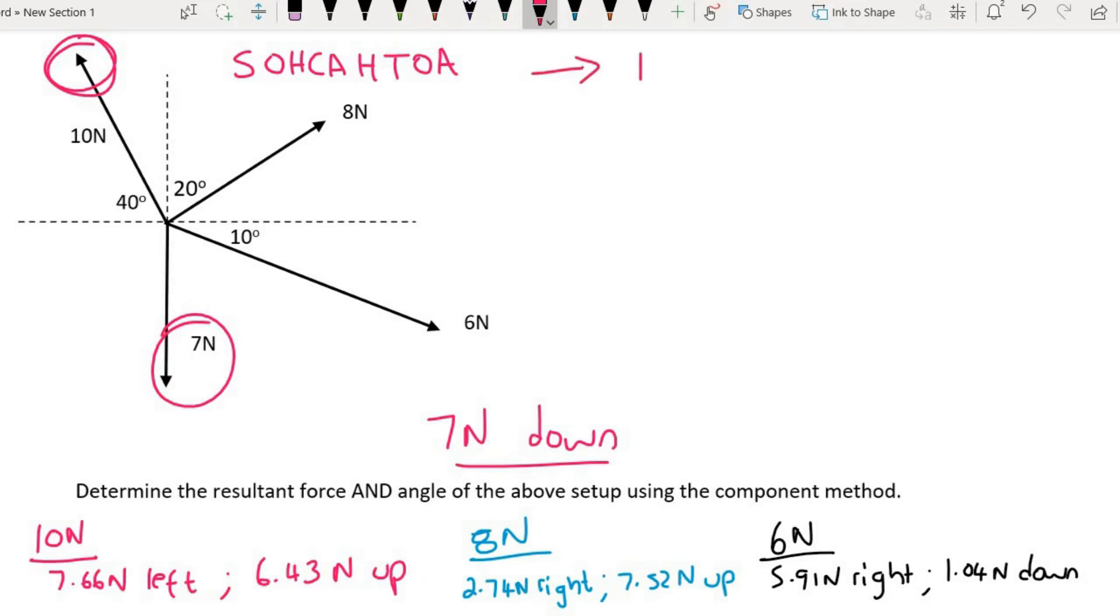Let's look at the left and right. I'm going to choose all the rights as positive, and we'll call this fx, meaning all the forces in the x direction. That's going to be equal to negative 7.66 because it's to the left, then positive 2.74 because it's to the right, and then plus 5.91. If we work this out we get 0.99 newtons to the right.